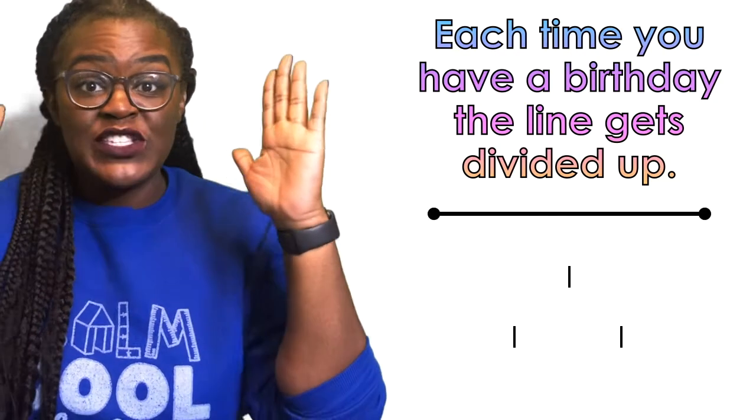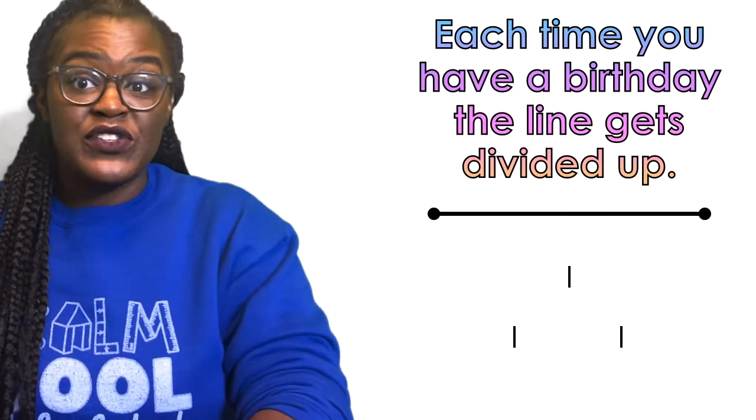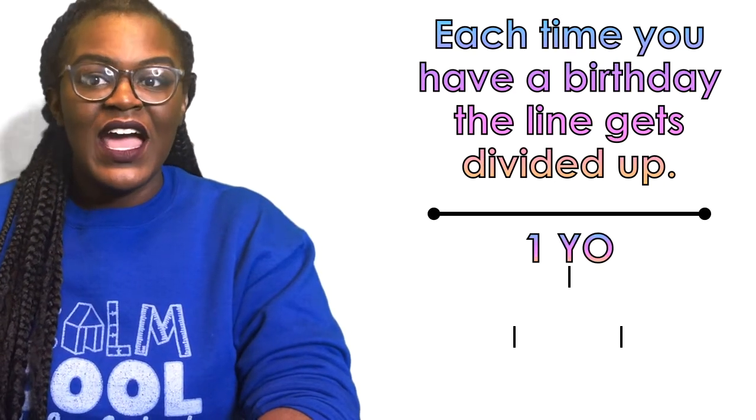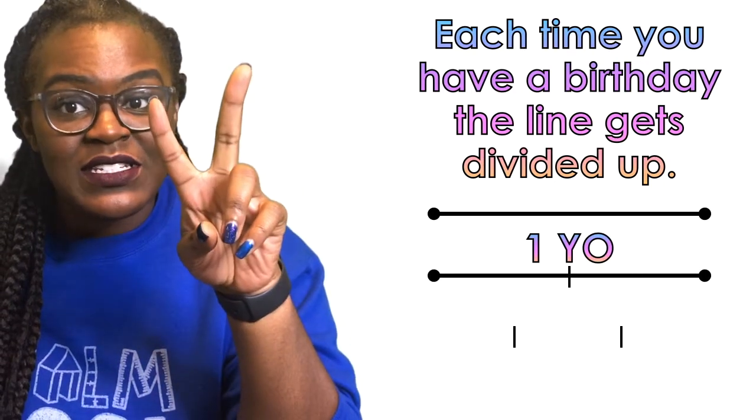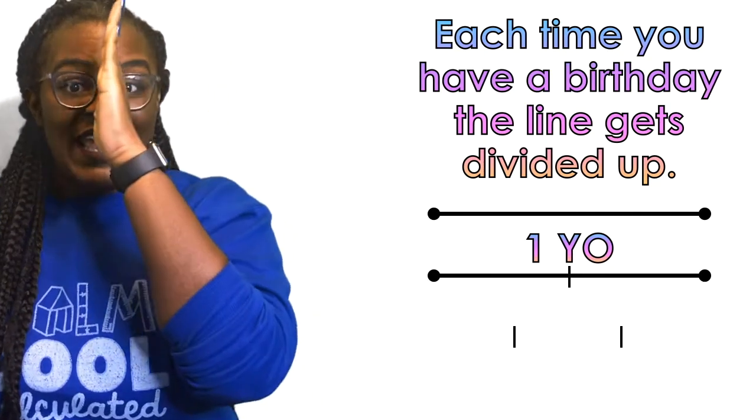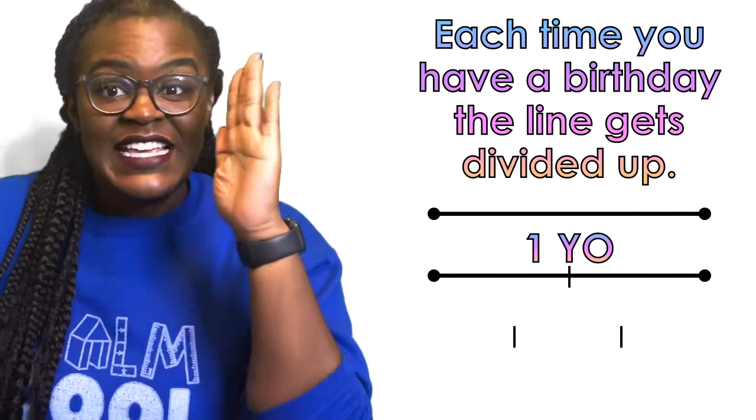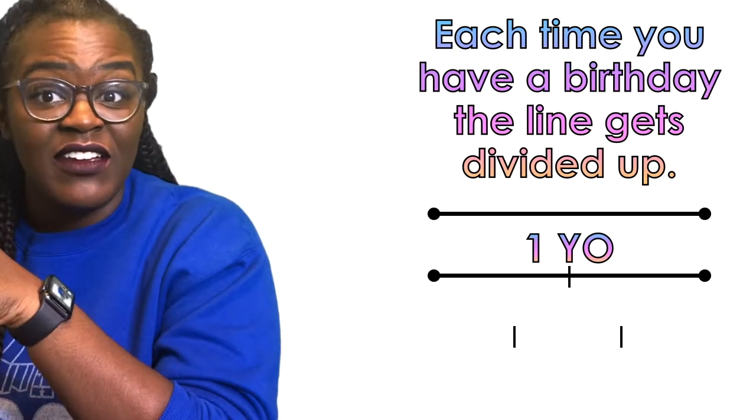One line is your entire life at one years old. So at two years old, that line, when it gets split in half, one year is half of the line, and the other half of the line is your second year.